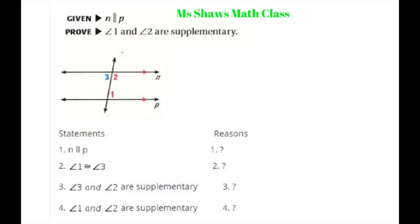Given that n is parallel to P, we have to prove that angle 1 and angle 2 are supplementary. We already know that n is parallel to P, so that is called given.